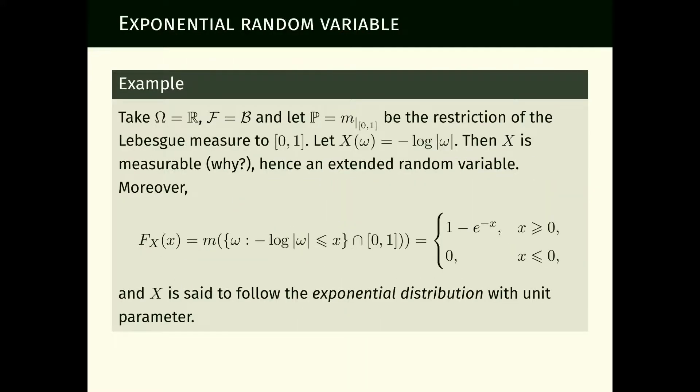To conclude this video lecture, let us answer a question from the very first video: existence of continuous random variables, one which is slightly more involved than the uniform on [0,1]. Let's construct an exponential random variable. We take sample space R, sigma algebra the Borel sets, and as probability measure the Lebesgue measure restricted to the interval (0,1).